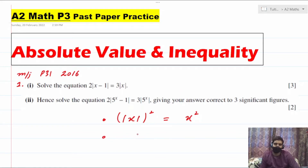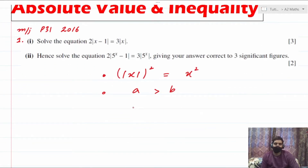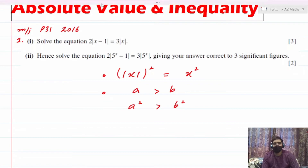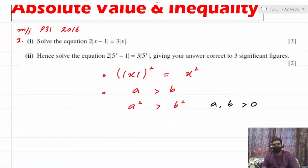The other prerequisite: if you have an inequality a > b and you square both sides, then a² > b² — but only if both a and b are positive numbers, i.e., a > 0 and b > 0. For example, if a = 2 and b = 1, we know 2 > 1, and squaring gives 4 > 1, which still holds.